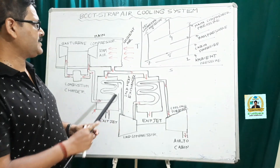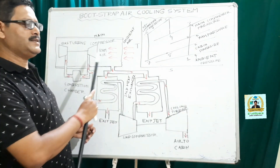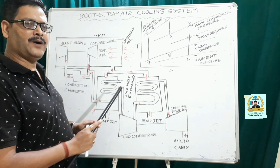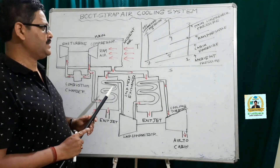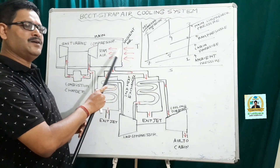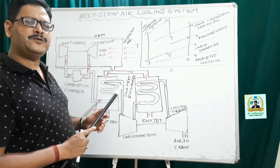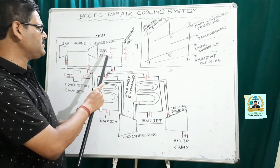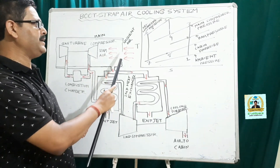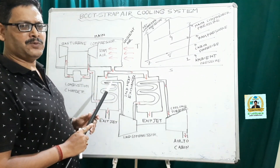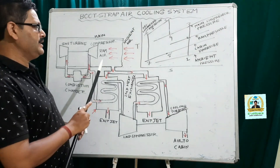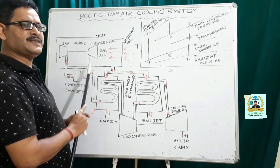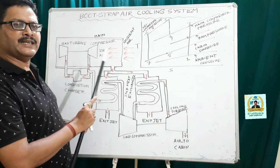Now we will discuss how the fluid flow is taking place and then we will discuss the entire process with the help of a temperature-entropy diagram. First, the ambient air flows through the diffuser. The diffuser is a smoothly varying structure which converts kinetic energy into pressure energy. After passing through the diffuser, the pressure of the ambient air is increased and that is what we call ram air. Then this ram air enters the compressor.